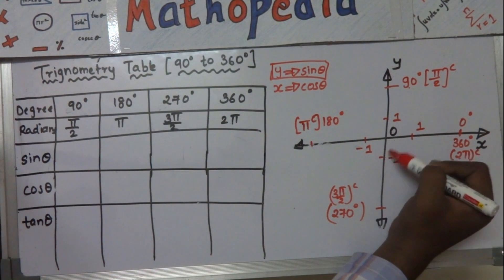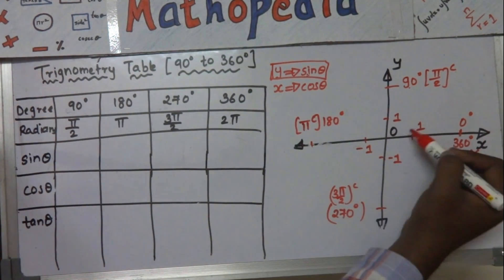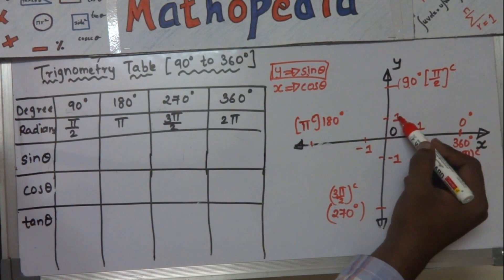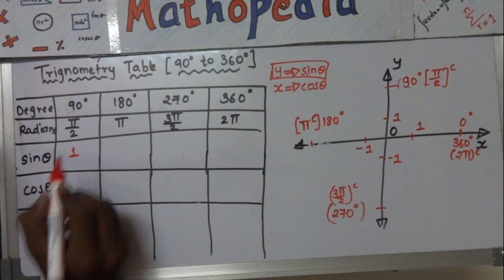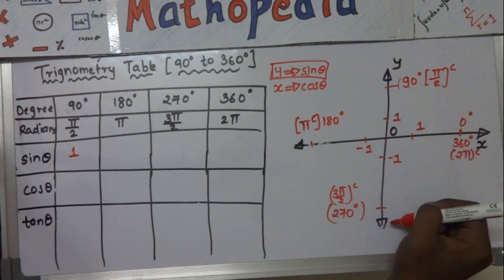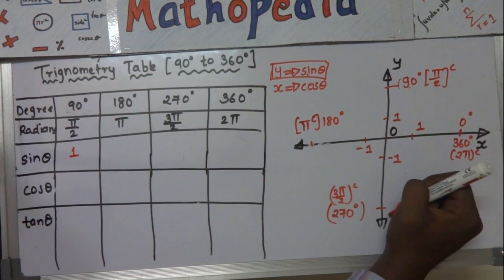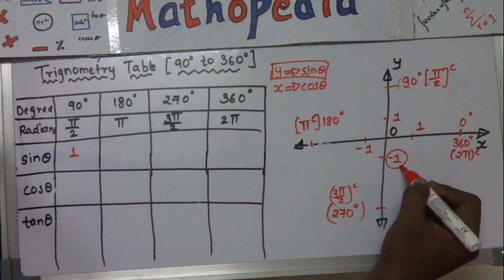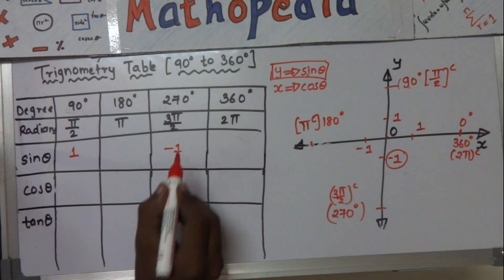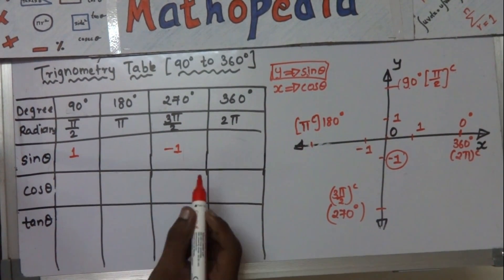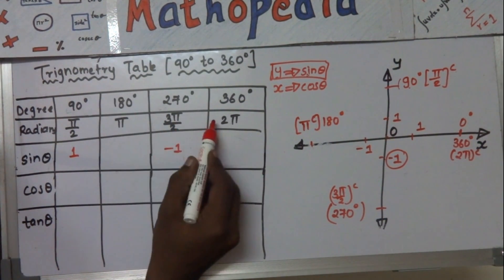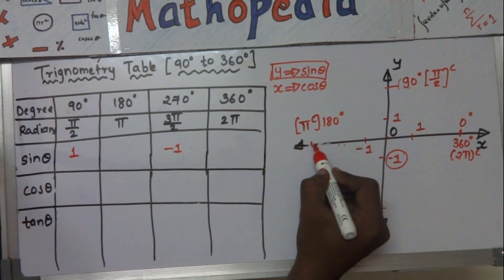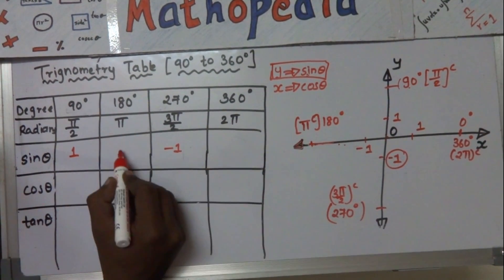Since sine is related to the y-axis: 90 degrees lies on the positive y-axis, so sine 90 is plus 1. Sine of 270 degrees (3 pi by 2) lies on the negative y-axis, so its value is minus 1. The remaining two angles — 180 degrees (pi) and 360 degrees (2 pi) — lie on the x-axis, not the y-axis, so their sine values are 0.